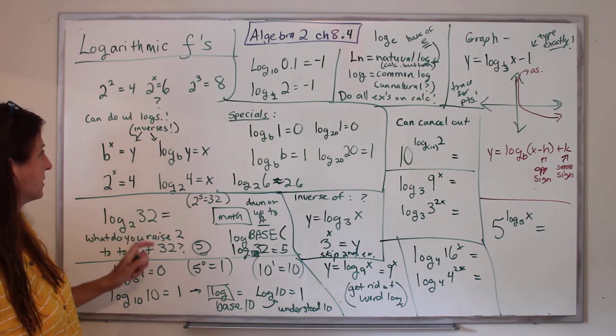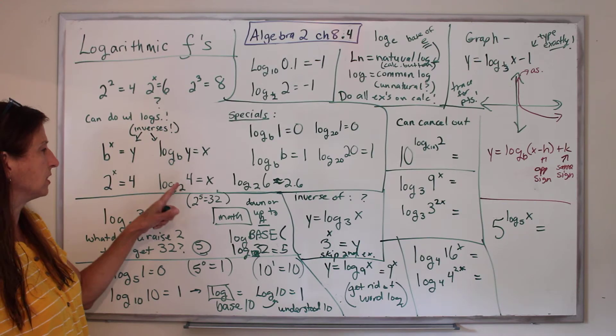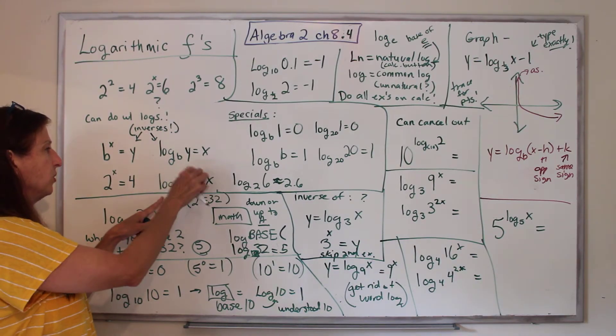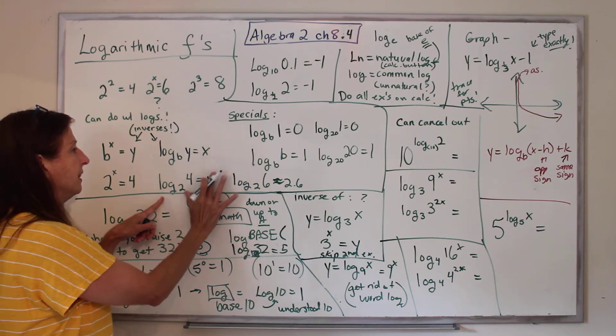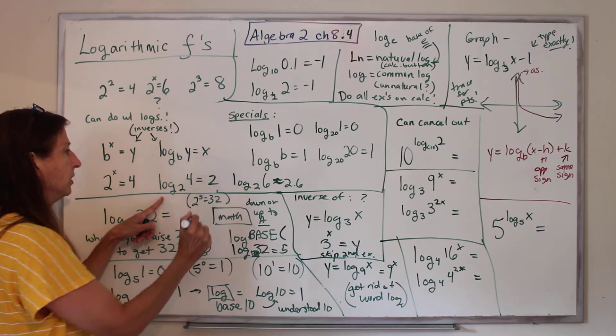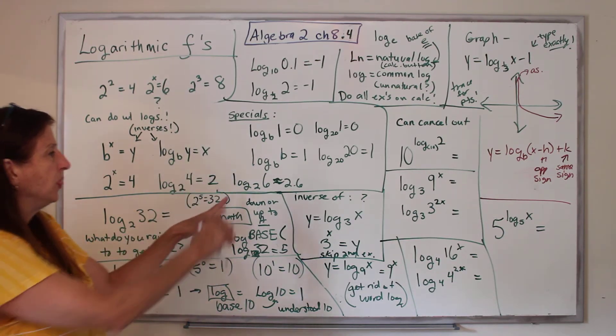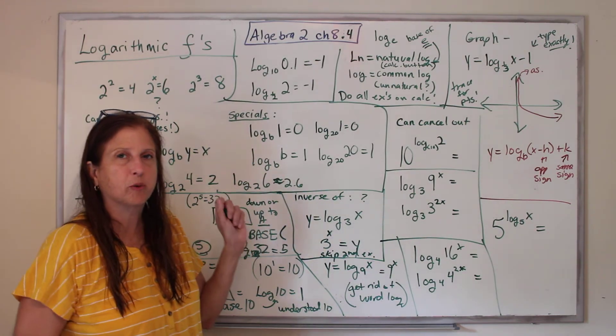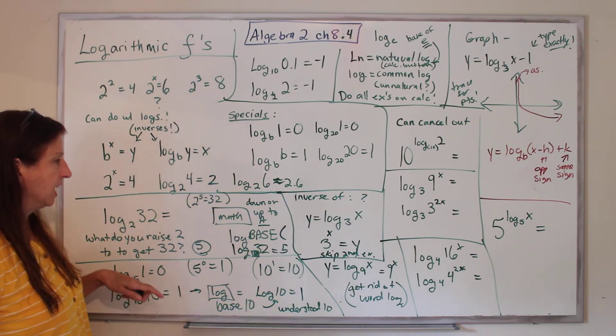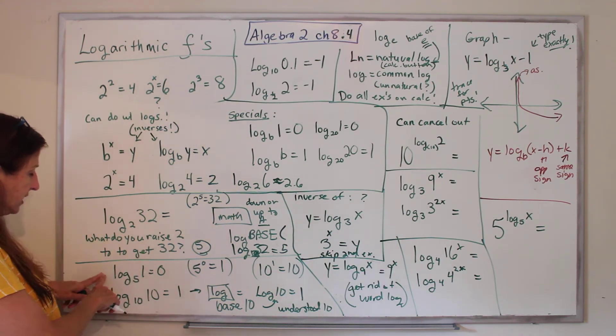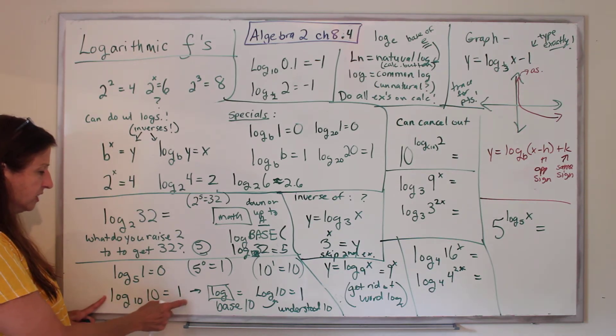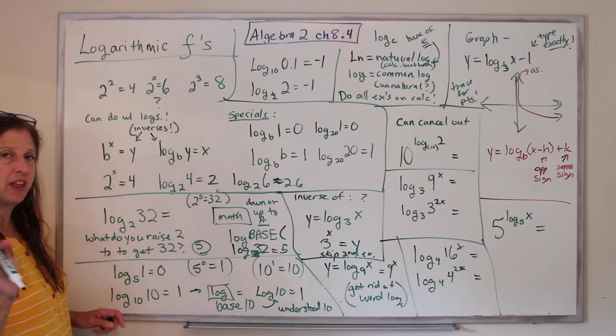Those are, you're writing the inverse there. Now, then I want you to go back on your calculator and do it again, and do log base 2 of 4, and you should get that that equals 2, because 2 squared is 4. Then I want you to do log base 2 of 6, and see if you get something around 2.6. Then I want you to do this one: log base 5 of 1 is 0, and log base 10 of 10 is 1. So do all of those and come back.